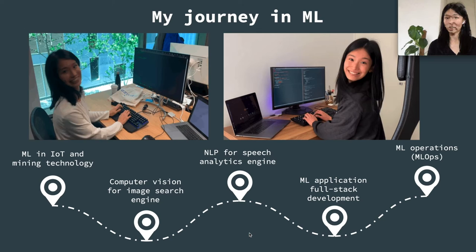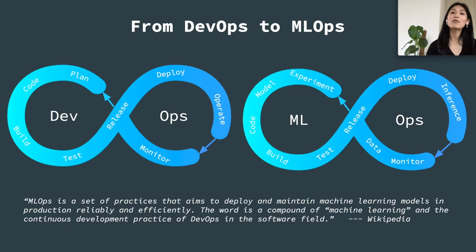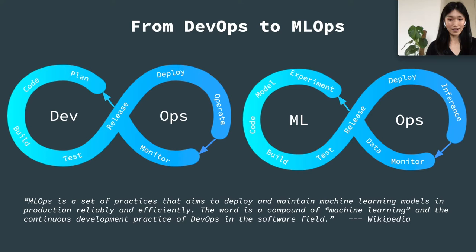Having been enjoying software engineering for some time now, I would like to think that the development of machine learning solutions is like an extension of the development of software applications. Putting machine learning models into production — so-called MLOps — is like putting software applications into production, which we know as DevOps. So from DevOps to MLOps, what is MLOps exactly? This is a definition from Wikipedia: MLOps is a set of practices that aims to deploy and maintain machine learning models in production reliably and efficiently. The word is a compound of machine learning and the continuous development practice of DevOps in the software field.